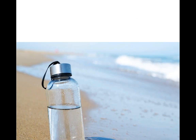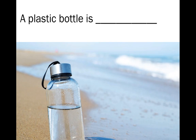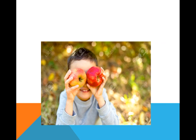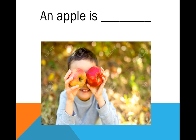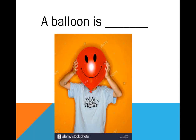The material is plastic. A plastic bottle is transparent or opaque? Transparent. What are these? An apple — is an apple transparent or opaque? Opaque. This balloon is opaque.